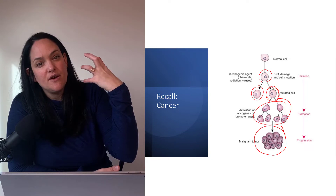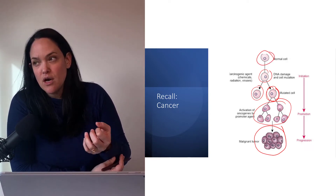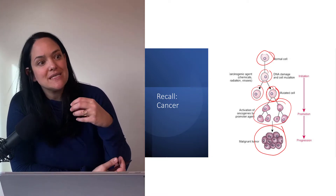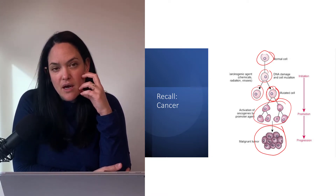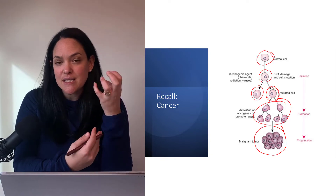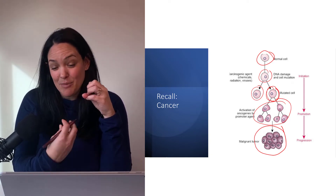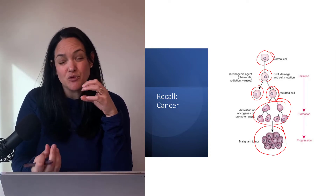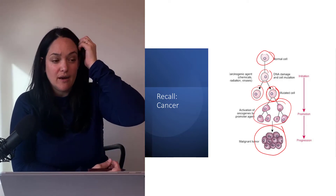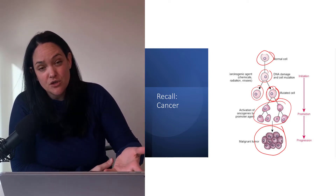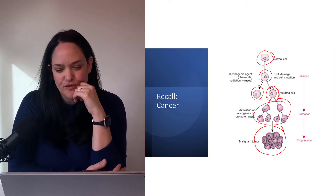These cancer cells don't function like the original healthy cells either. One of the issues with cancer is that it takes up room from healthy tissue — it blocks things, pushes on things, takes up a lot of fuel, and creates its own mini vasculature to take in more fuel, which leaves other tissues starved. That's just a basic overview of cancer.